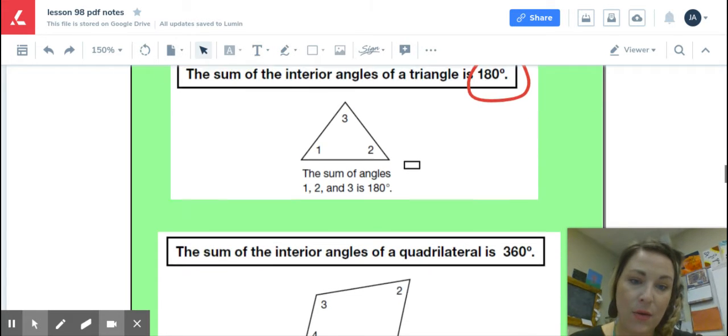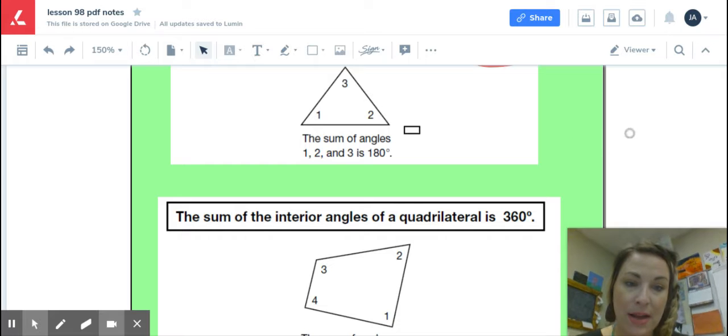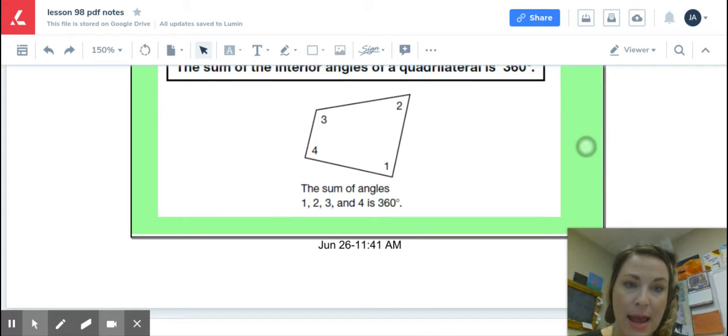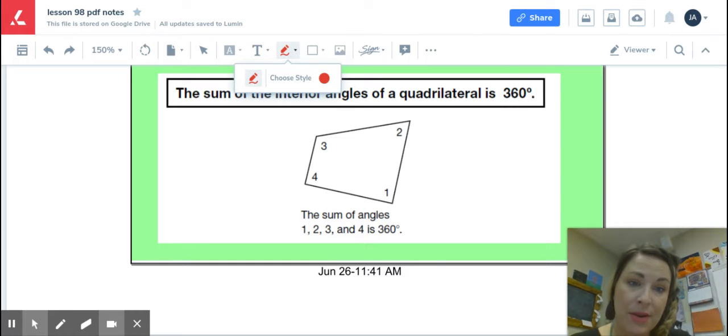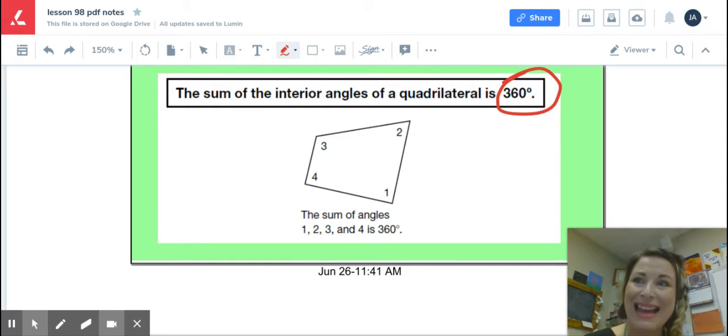And then, of course, as we look at quadrilaterals, the sum of the interior angles for a quadrilateral then is 360 degrees. And that makes sense because we know if we cut a quadrilateral in half, we end up with two triangles. So if we were to have 180 degrees, 180 degrees, add those together, we of course would get this 360 degrees.